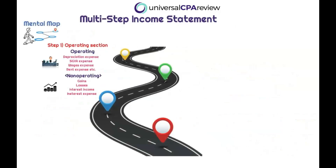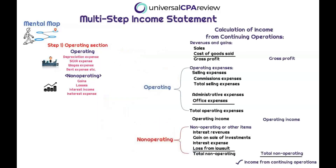Step one in our mental map is understanding that we're first calculating income from continuing operations. Income from continuing operations includes two different sections: the operating section and the non-operating section. The operating section includes operating revenues and operating expenses — essentially everything that goes into the ordinary course of business: depreciation expenses, SG&A (sales, general, and administrative expenses), wages expenses, rent expenses, etc.